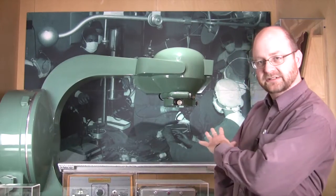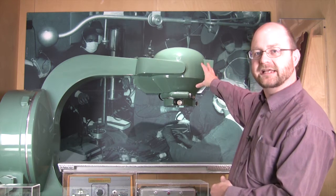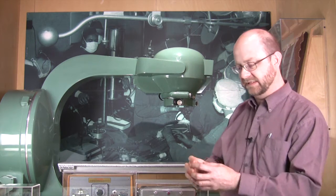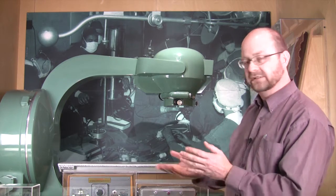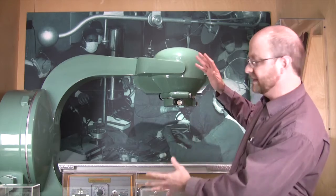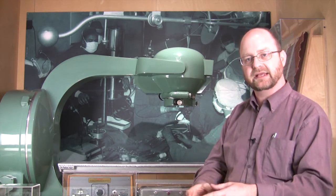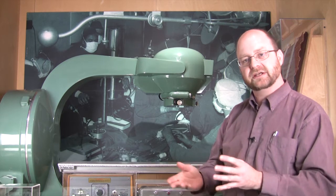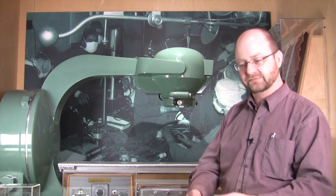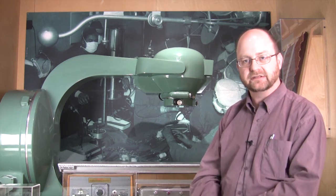You would have a patient lie on this bed, and in this bulbous head above them would be a lump of cobalt-60 which is radioactive, shielded from the patient initially by a lead shutter. You would move this so that the source was directly pointed at the cancer itself, and then open the shutter and let a beam of radiation insert itself into the cancer and kill the cancer cells.